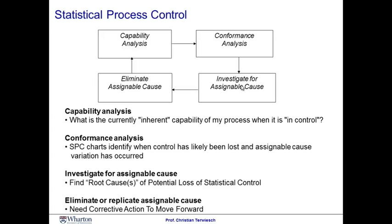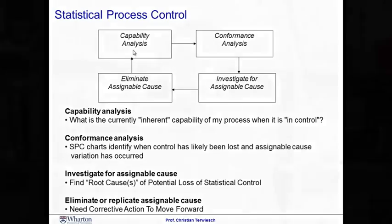Once you've identified the root cause, be it a machine or an operator, you try to eliminate the assignable cause variation. That gets you back to the starting point. As you're doing this, hopefully, you're able to reduce the variation in the process and also increase the capability score of your operation.